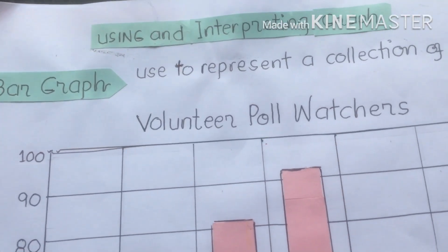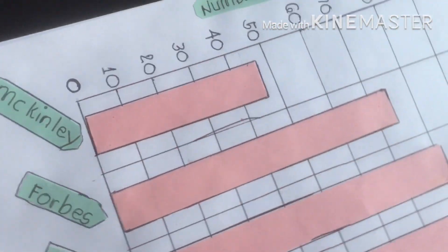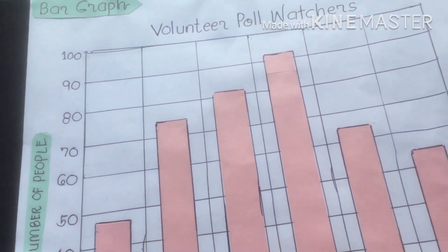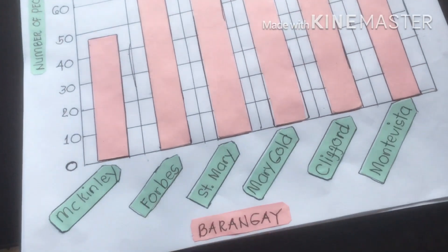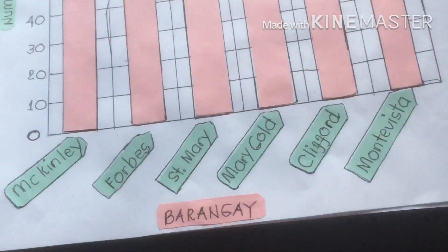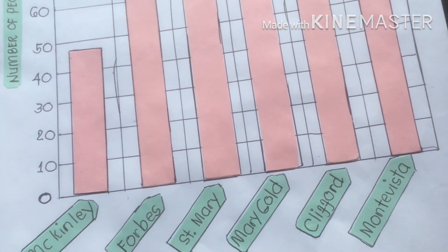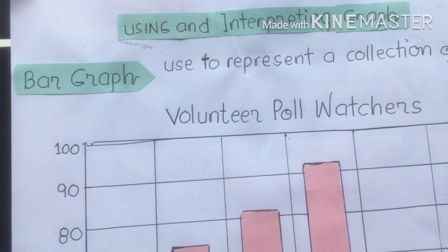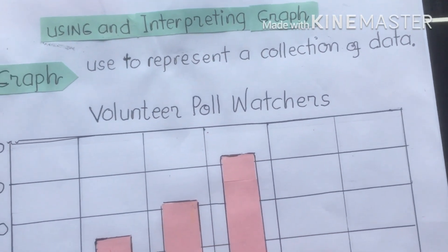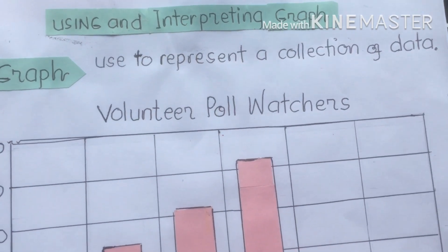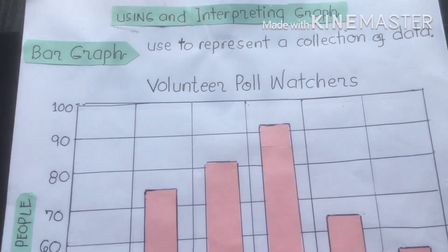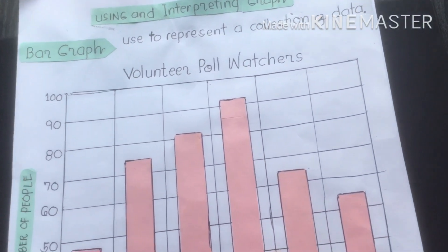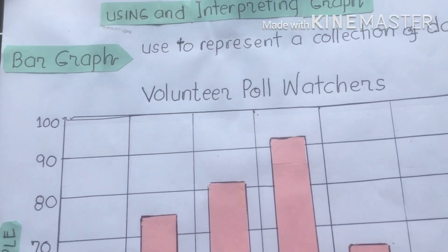I hope, dear students, you learned a lot from our discussion today using and interpreting a graph represented by a bar graph. This graph shows the number of people who volunteered to watch the polls during the local elections, and these questions are answered by the graph. Not only bar graphs — we also have circle graphs, pie graphs, and picture graphs — all very helpful for students and teachers to easily discuss and understand topics being presented.